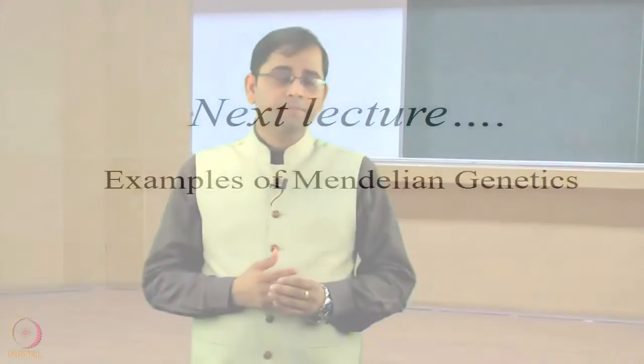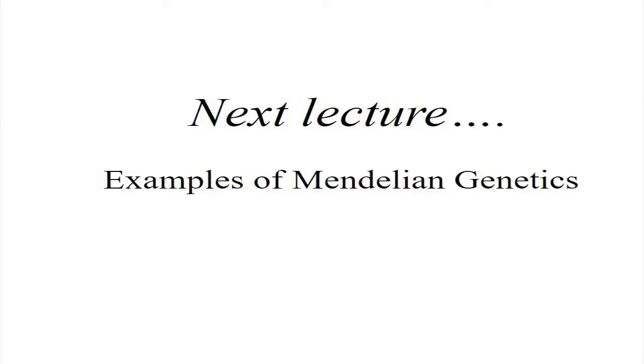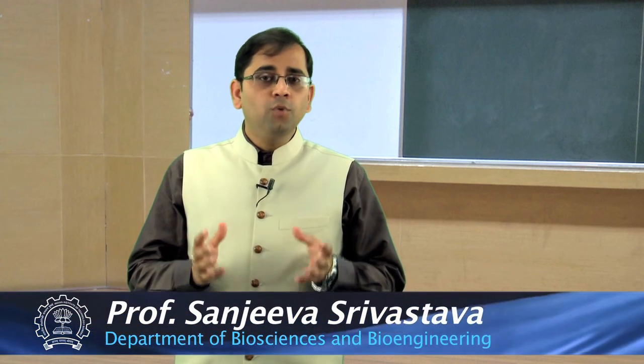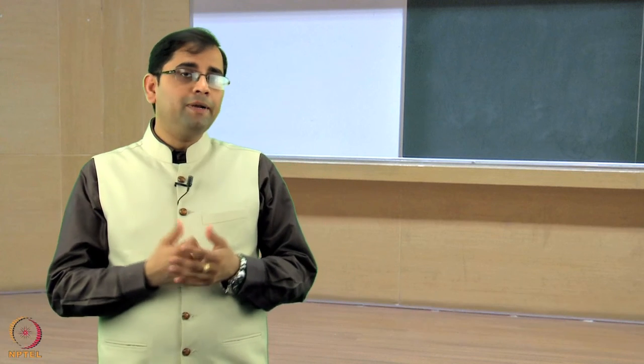You are now familiar with the two main Mendelian laws: the law of segregation and the law of independent assortment. In the next lecture, we will discuss examples of Mendelian genetics, including how many human traits follow Mendelian inheritance patterns and how inheritance can be more complex than simple Mendelian genetics predicts.